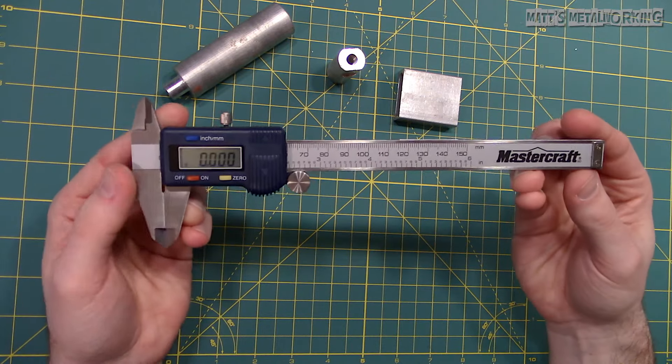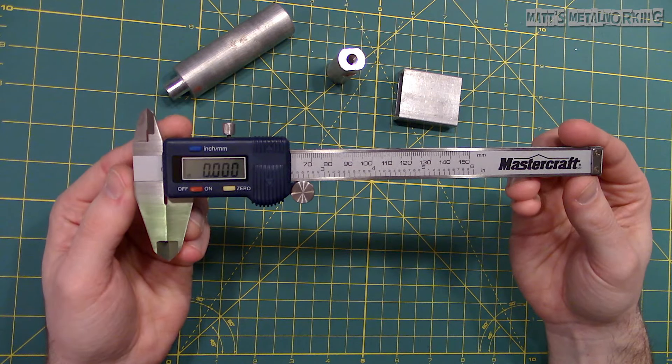To go over the parts of the caliper, first is the outside jaws which is used to measure the outside diameter, length, width or thickness of an object. Next is the inside jaws used to measure the inside width of a slot, groove or hole or the inside diameter of a bore.